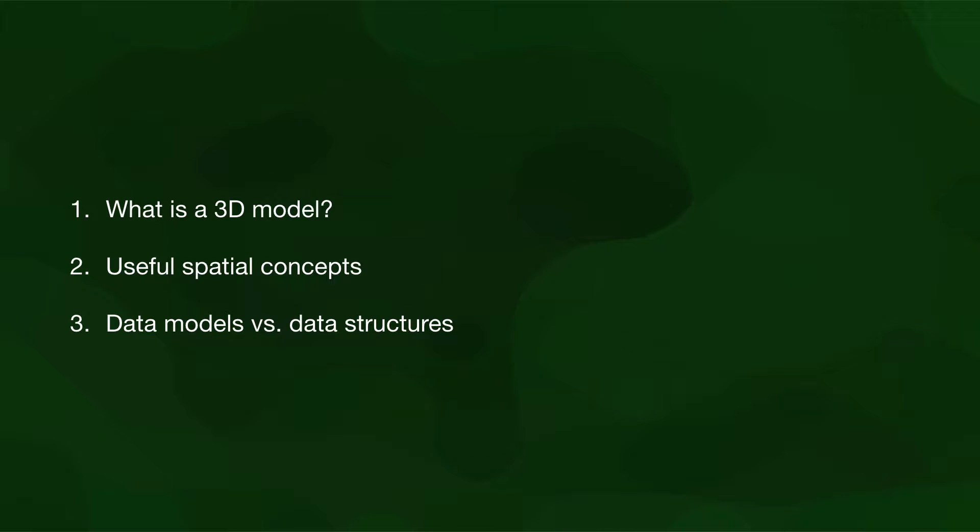In this introductory lesson, we will cover three topics: In the context of geographic information, what is a 3D model and how it is made, how 3D modeling is related to some common spatial concepts, and the difference between a data model and a data structure.